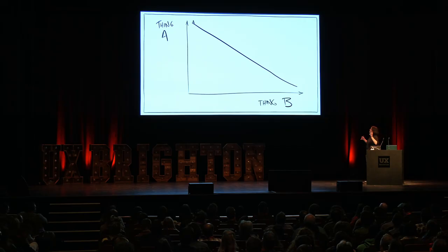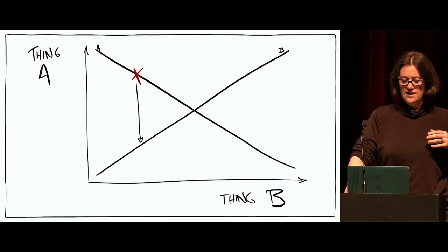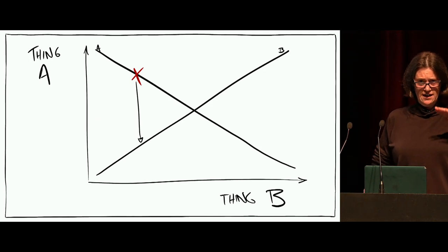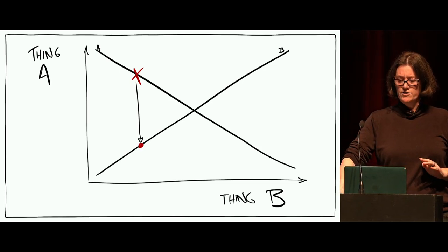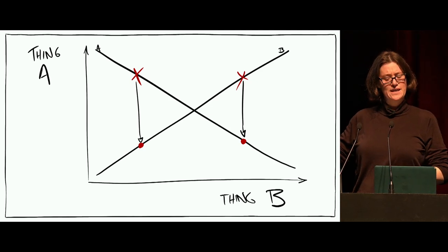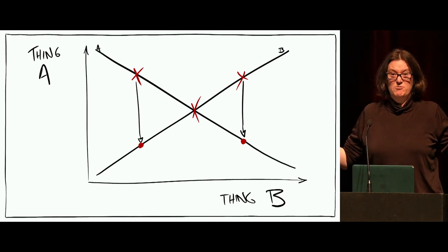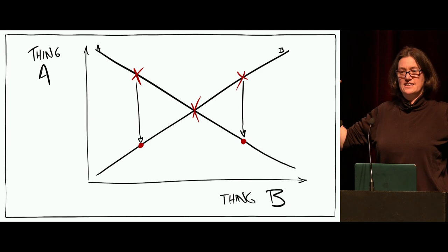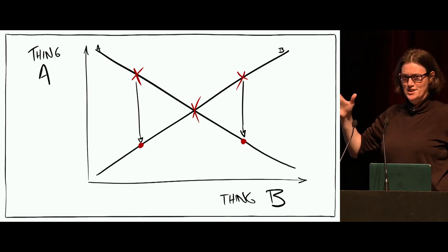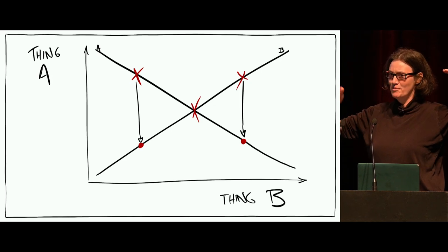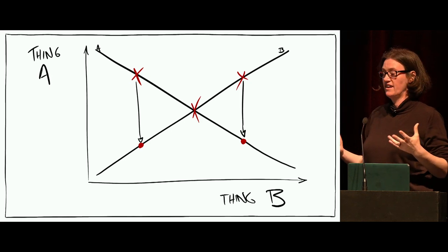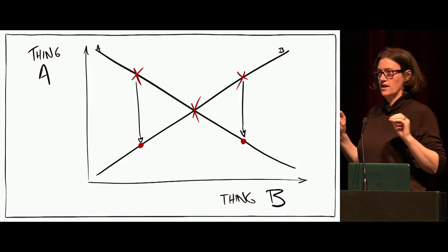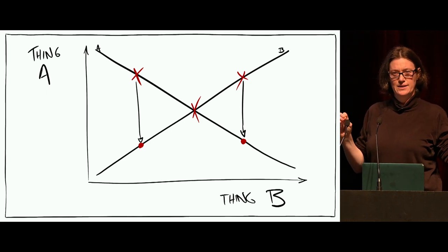What is a trade-off? Trade-offs are where you have thing A and thing B, and as you have more of thing A, you have less of thing B. Think of this as maybe speed and quality, or maybe acquisition and retention. If you want a lot of speed, you might get not so much quality, or if you want a lot of quality, you might not have so much speed. This is a common point of tension between product and UX — because product wants speed and UX usually wants quality.